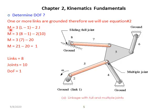The formula is: m, the degree of freedom or mobility, is equal to 3 multiplied by (l minus 1), close bracket, minus 2j. Here l represents the number of links and j represents the number of joints. Before counting the links, please pay attention: this mechanism has four ground links — ground link number one, two, three, and four — and we have to count these four ground links as a single link.